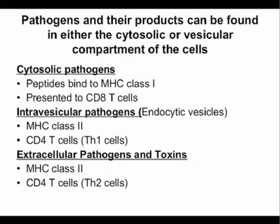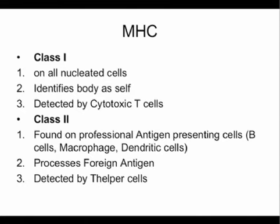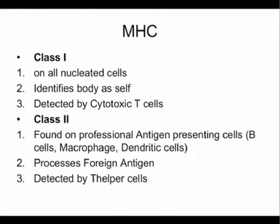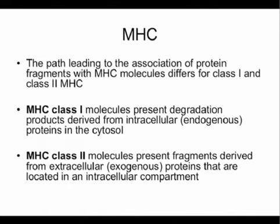Extracellular pathogens and toxins also get processed by MHC class 2 and presented to different classes of T-cells. To recap: class 1 is expressed in all nucleated cells in the body, it identifies the body as self, and it's important in graft versus host disease and transplantation. It's detected by cytotoxic T-cells or CD8 positive T-cells. Class 2 is expressed by professional antigen-presenting cells, processes foreign antigen, and is detected by helper T-cells.